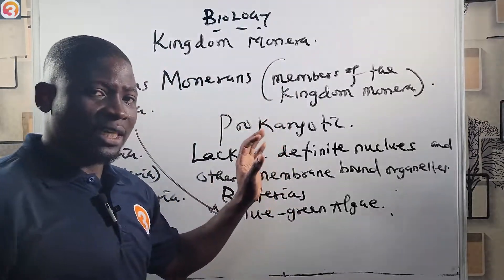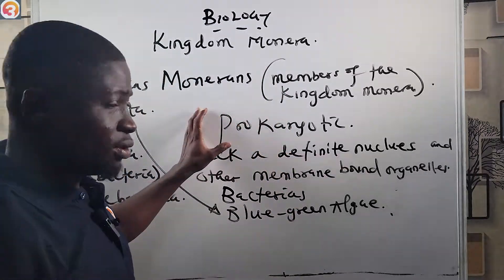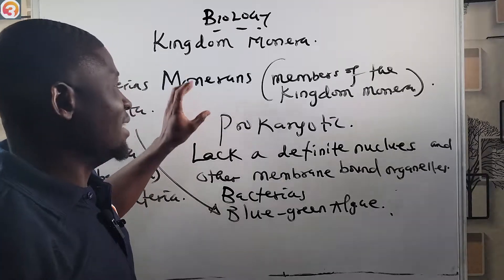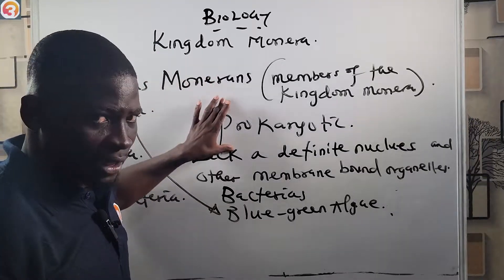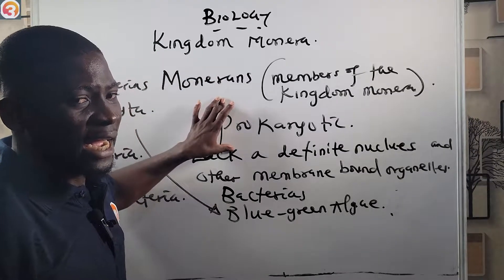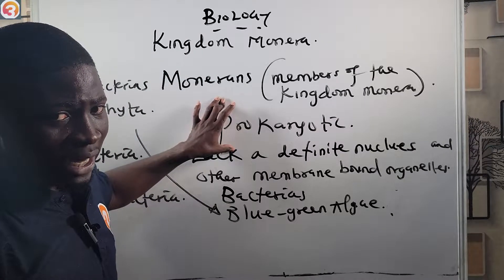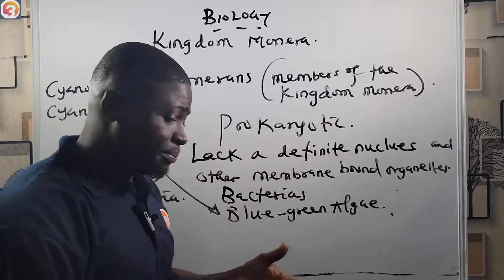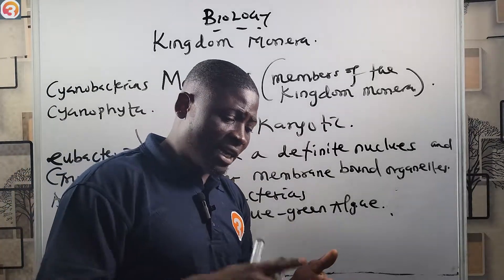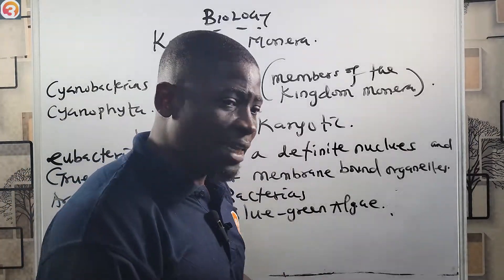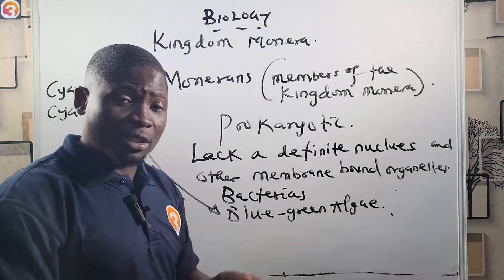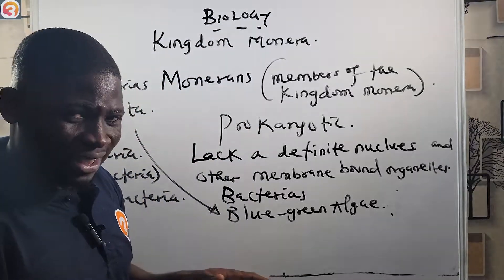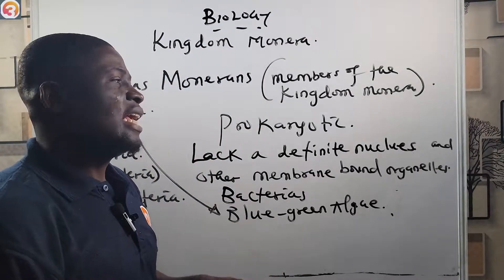Among the five-kingdom classification, only monerans are prokaryotic. All others — plants, animals, fungi, and protists — are eukaryotes. They all have a nucleus and other membrane-bound organelles.